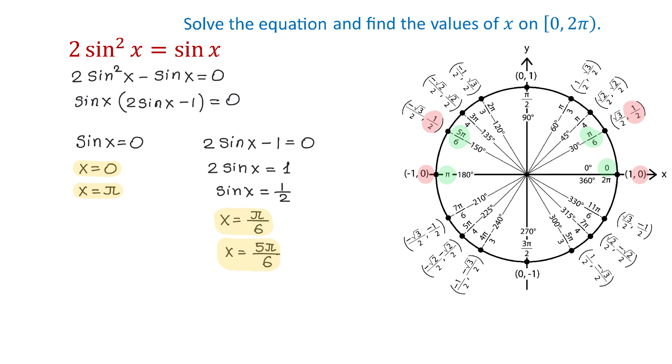Now we have these 4 solutions and let's write them as a solution set from the smallest to the largest. So first we will write 0, then π over 6, then 5π over 6, then π.